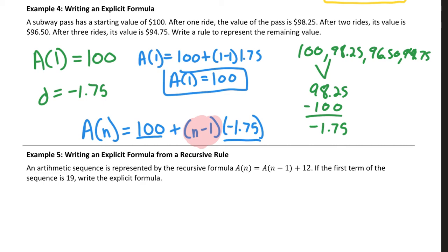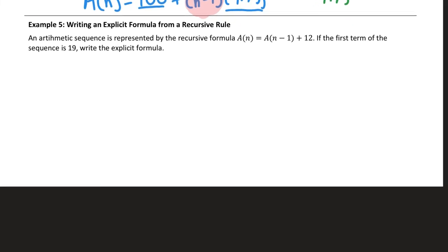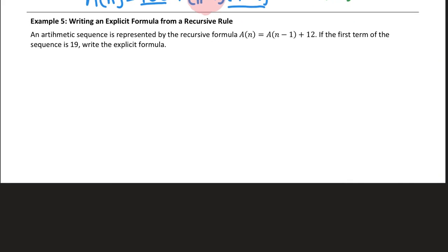So in the last example, example 5, I'd like you to know how to convert a recursive rule to an explicit formula. So this is an arithmetic sequence. This is represented by this recursive formula. A of N equals A times N minus 1 plus 12. The first term of the sequence is 19. So what I'm going to do is I'm going to say the first term is 19. And then you have to pick out the common difference from this recursive rule. This recursive rule says if you have the last term, you get the next term by adding 12. So my common difference is 12.